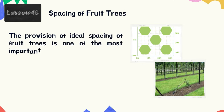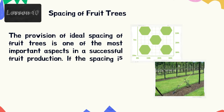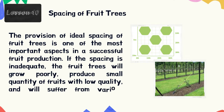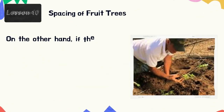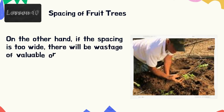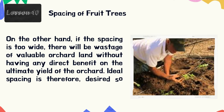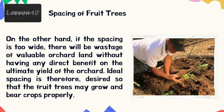The next topic is spacing of fruit trees. The provision of ideal spacing of trees is one of the most important aspects in a successful fruit production. If the spacing is inadequate, the fruit trees will grow poorly, produce small quantity of fruits with low quality, and will suffer from various diseases and insect pests. On the other hand, if the spacing is too wide, there will be wastage of valuable orchard land without any direct benefit on the ultimate yield of the orchard. Ideal spacing is therefore desired so that the fruit trees may grow and bear fruits properly.